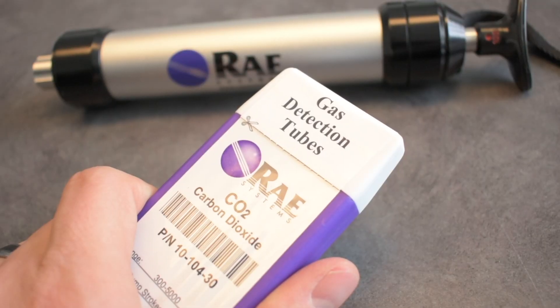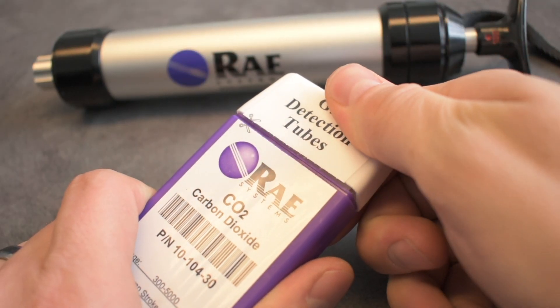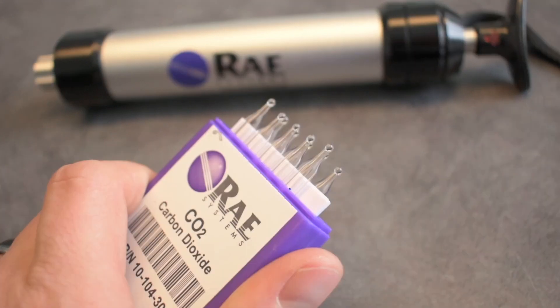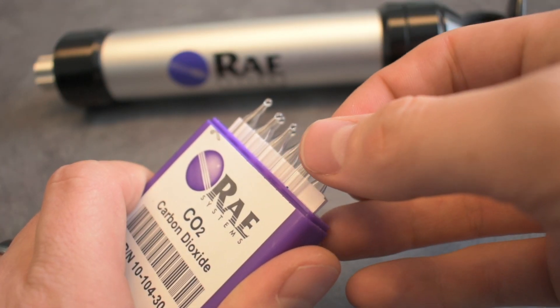First, gently open up the pack of tubes. You can cut along the perforated edge to make things easier. Pull out one of the tubes.